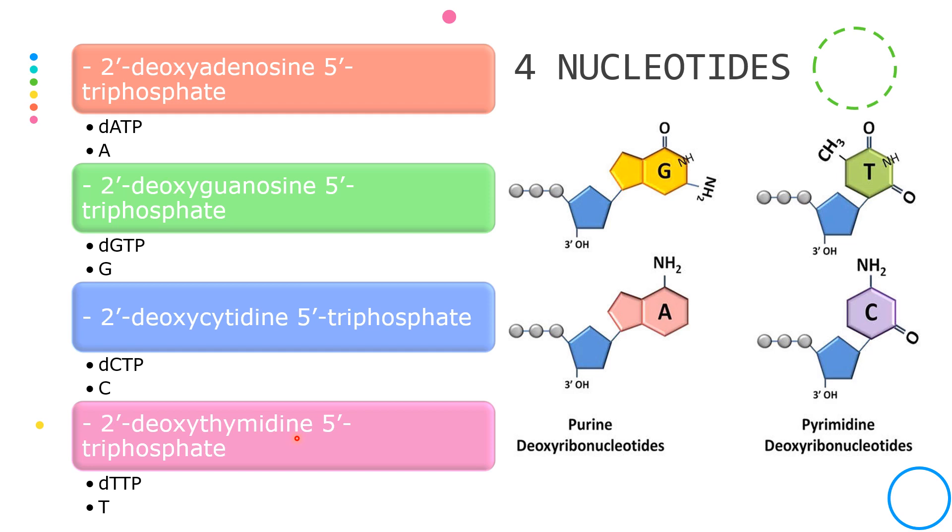Normally, however, we abbreviate these into dATP, dGTP, dCTP, and dTTP, or even just to A, G, T, and C, especially when writing out the sequence of nucleotides found in a particular DNA molecule.